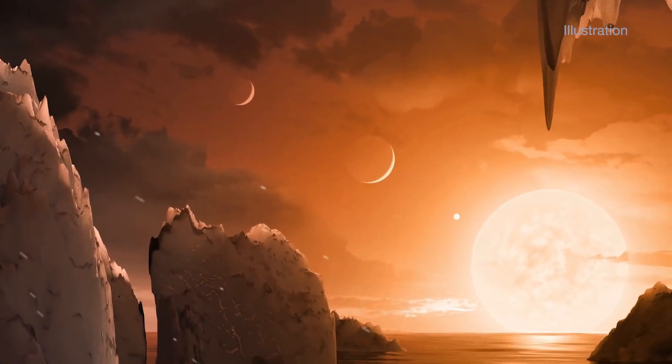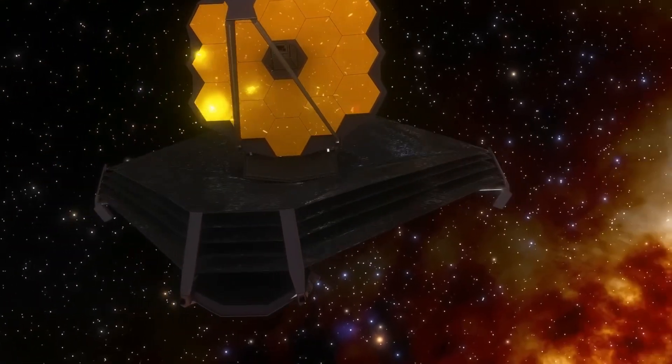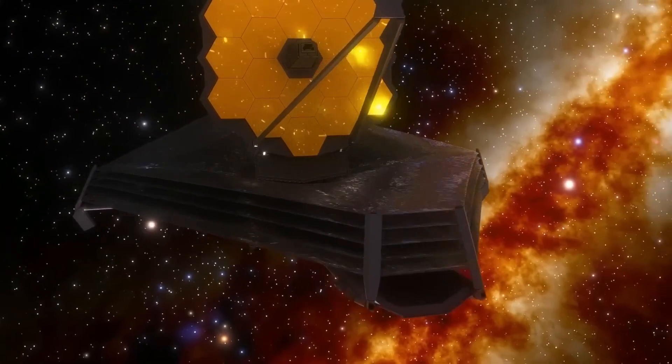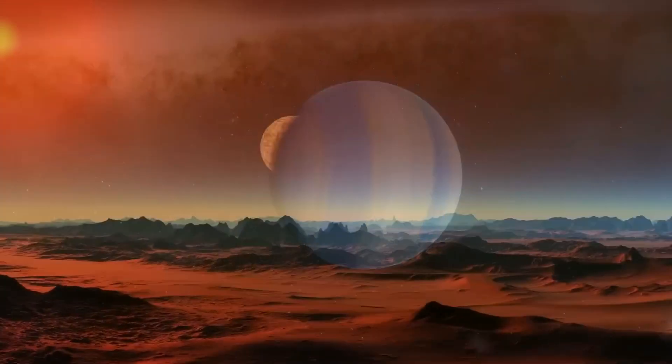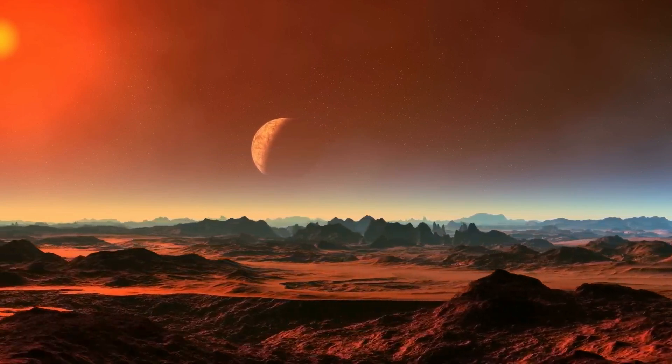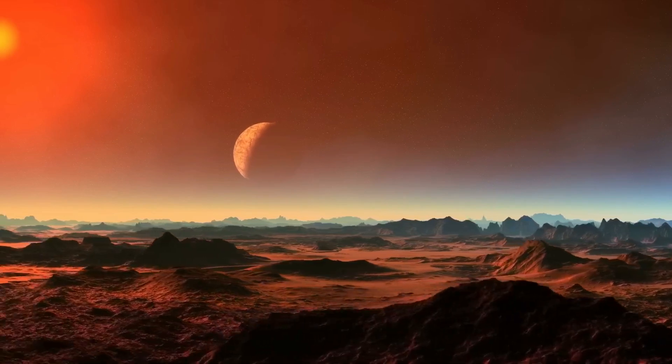The researchers used a method called secondary eclipse photometry, which involved merely measuring how the brightness of the system changed as the planet moved in front of the star. If it has an atmosphere to move the heat around and redistribute it, the day side will be cooler than if it doesn't have an atmosphere. If there's nothing going on, even though the TRAPPIST-1b doesn't get hot enough to make its own visible light, infrared light can be seen coming from the planet.